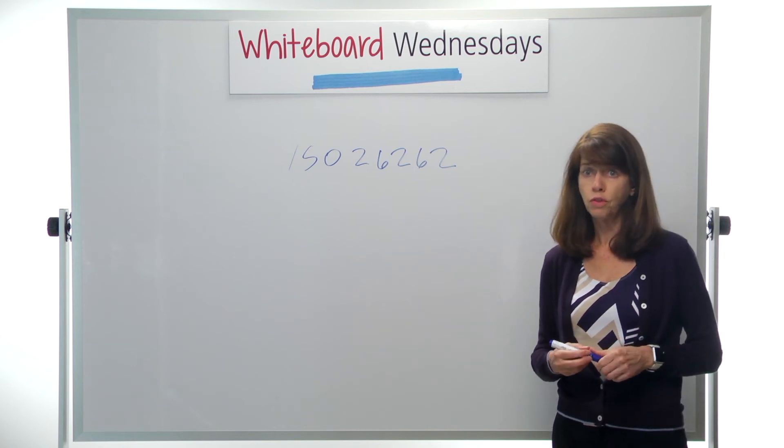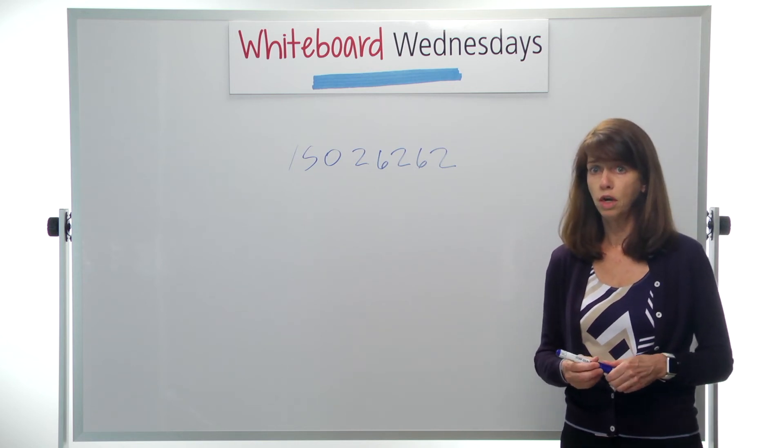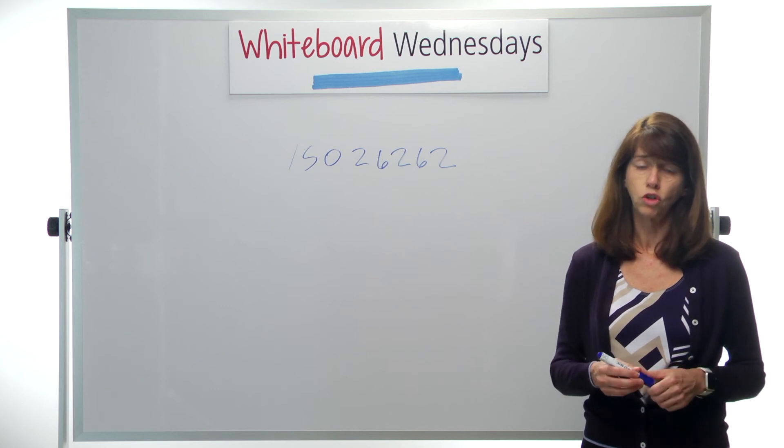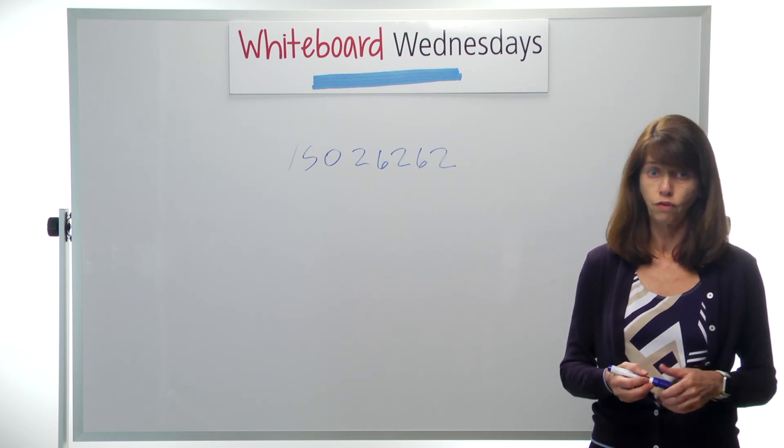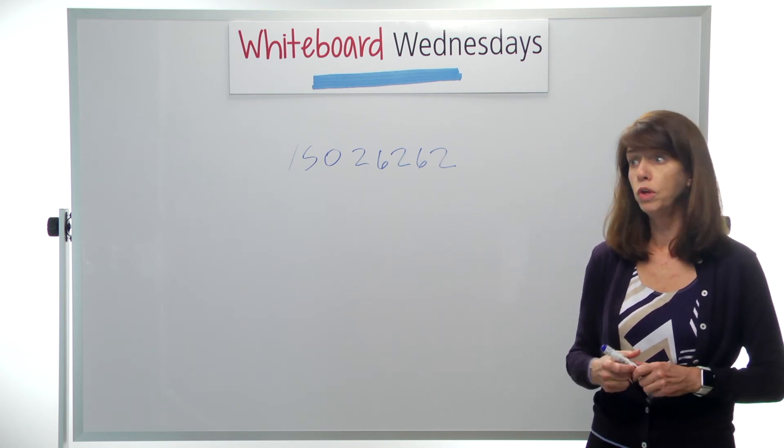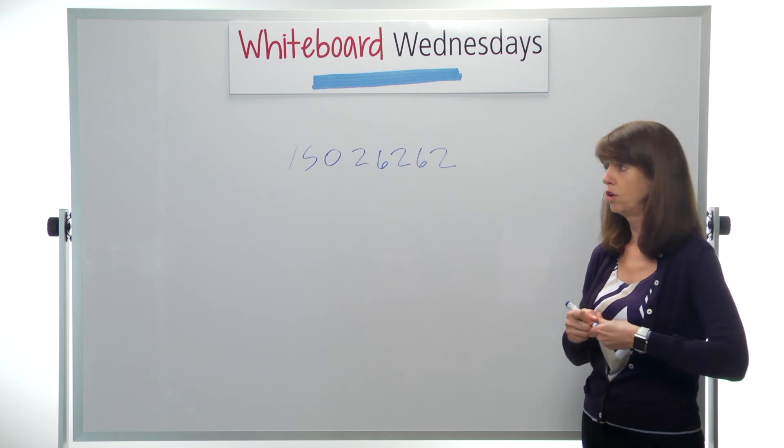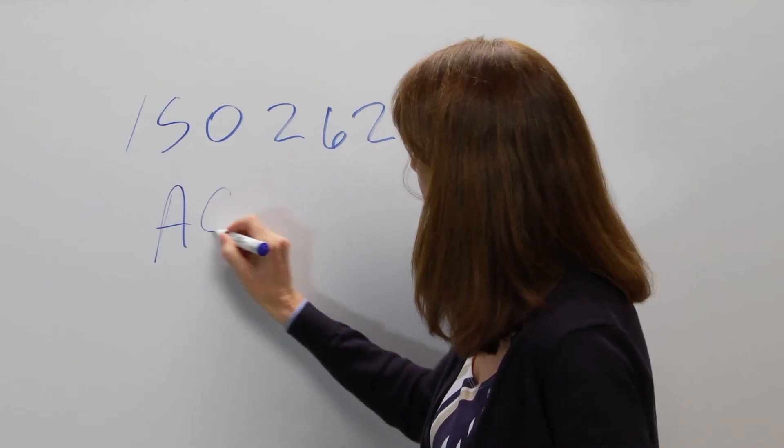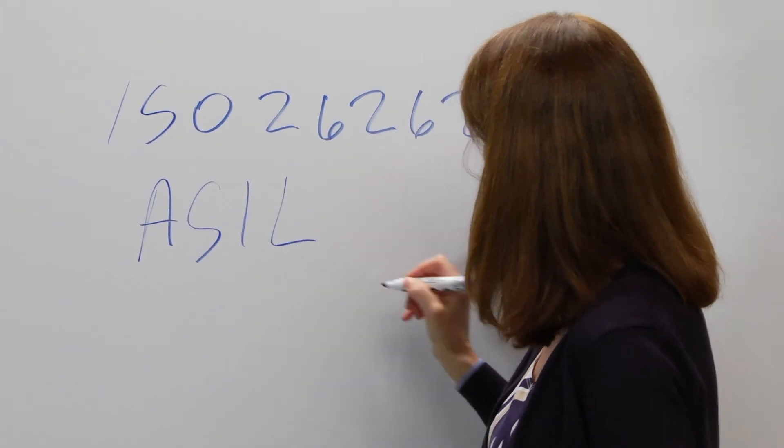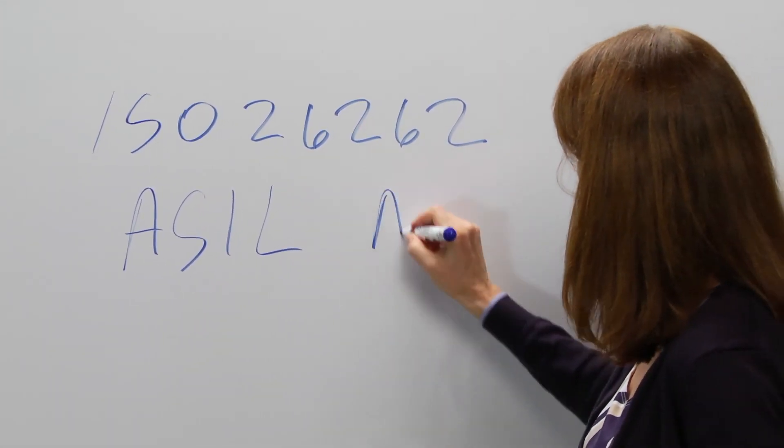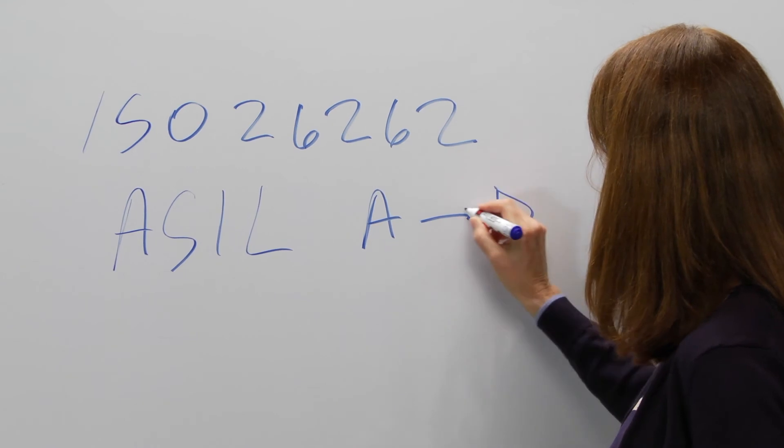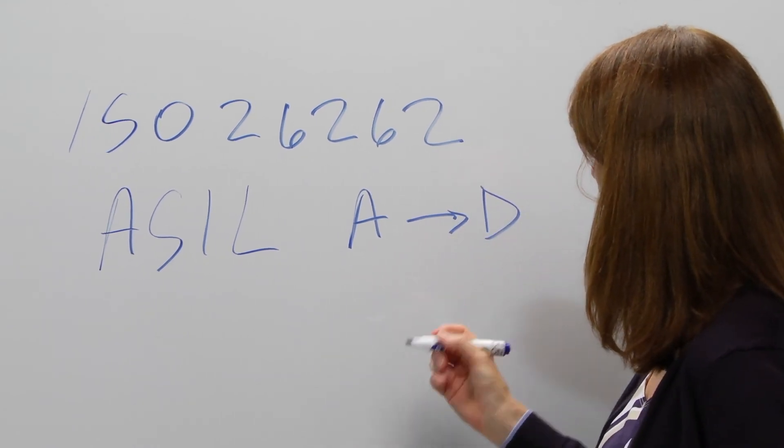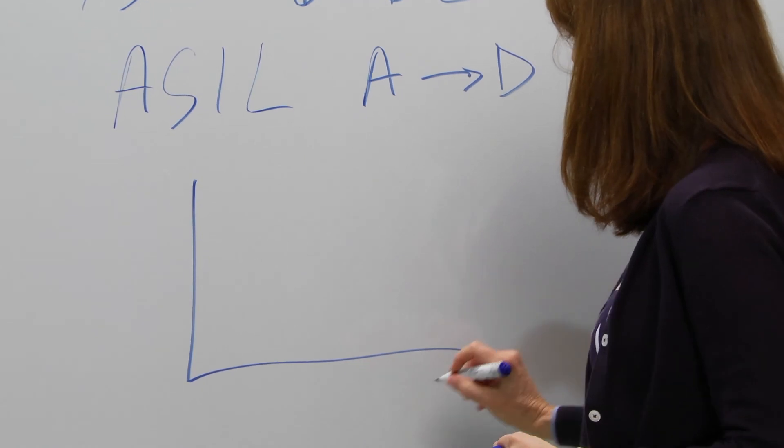The application, the end application of the design, really dictates the amount of functional safety that needs to be certified for that design. Within the ISO 26262 standard, it's classified by ASIL levels. Those are automotive safety integrity levels, and they're classified from A to D.